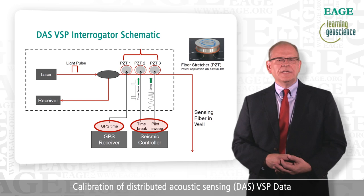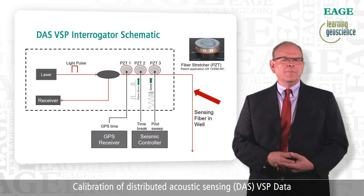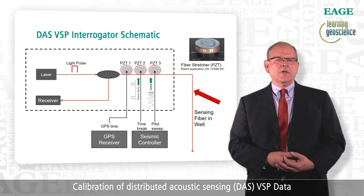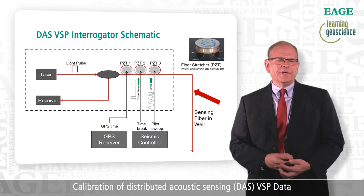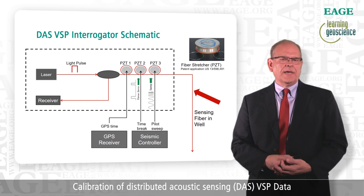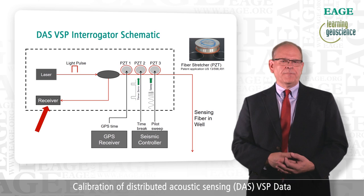The light then emerges from the interrogator unit and travels along the fiber down the well. Impurities in the glass fiber back scatter light all along the fiber, which is then propagating back up along the fiber toward the interrogator unit. These backscattered signals are actually the ability for the fiber to record and sense seismic energy. The backscattered light encounters the circulator, which directs the light to the receiver, where it's converted into an electrical signal, and ultimately digitized and converted into a seismic signal.